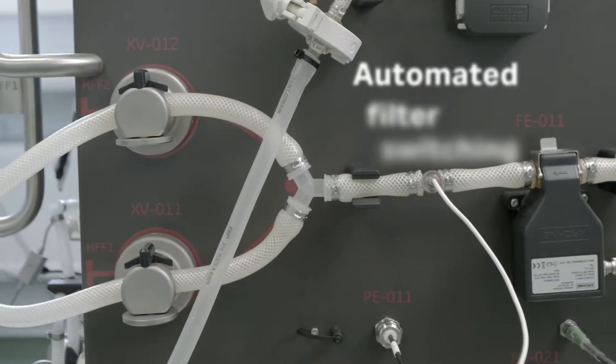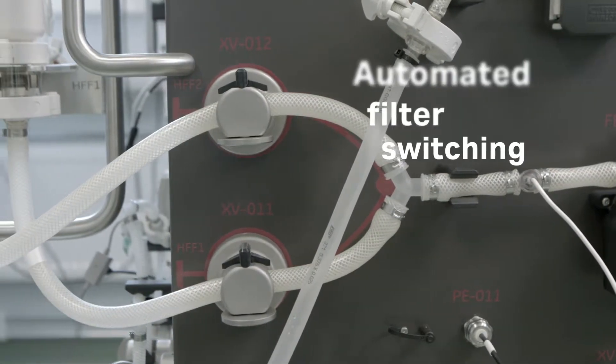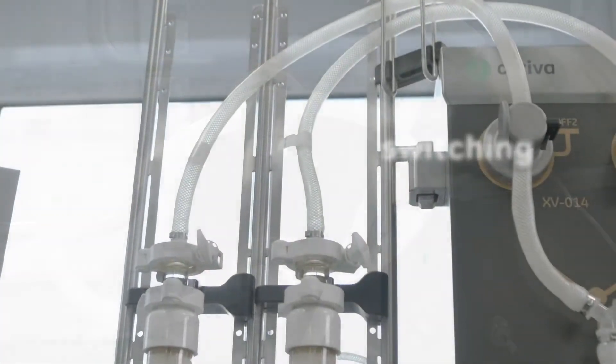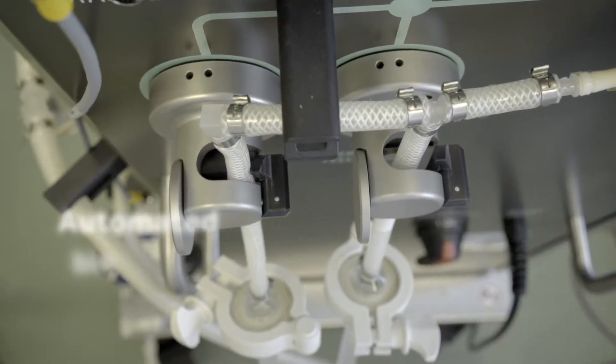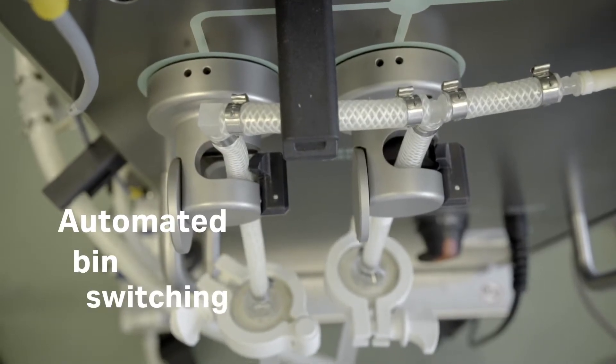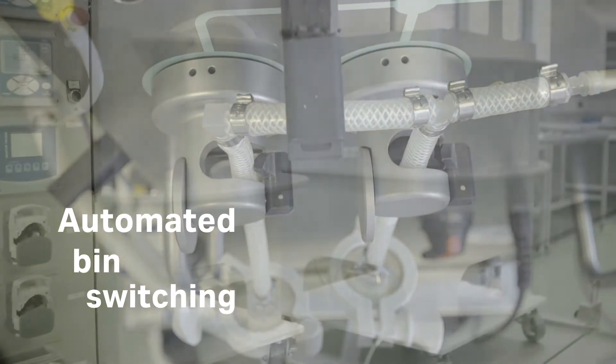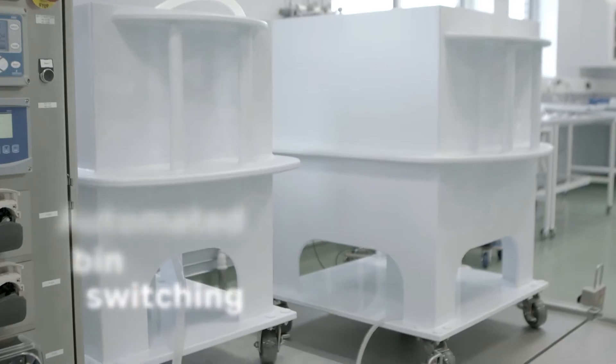The APS automatically switches from the primary to backup filter when needed, so you don't need a backup system. And it automatically switches permeate bins when full and media bins when empty to keep the system running smoothly and minimize hands-on time.